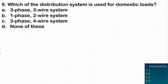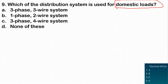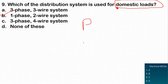The next question: which distribution system is used for domestic loads? Since the transformer is connected delta-star for secondary distribution, the secondary has three phases and a neutral. Each domestic load is connected with two lines — phase and neutral — so a single-phase two-wire system is the correct answer.